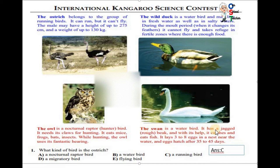the owl uses its fantastic hearing. Nocturnal animals mean they hunt at night. The swan is a water bird. It has a jagged rough beak. With its help, it catches and eats fish. It lays three to eight eggs in a nest near the water, and eggs hatch after 35 to 45 days. Now question number one.